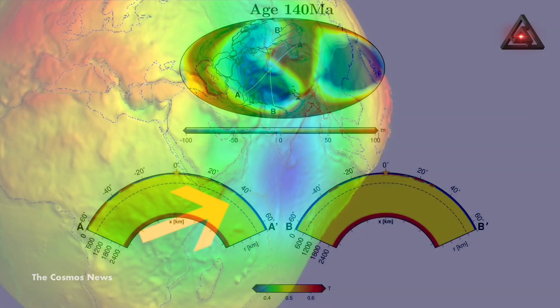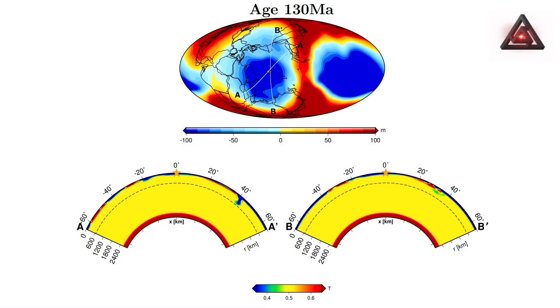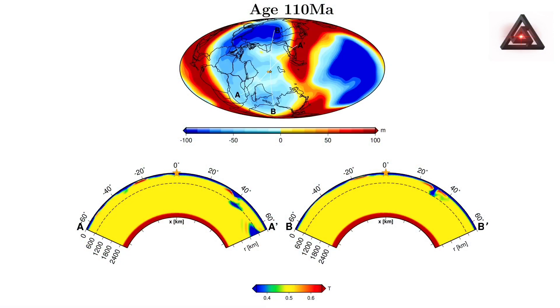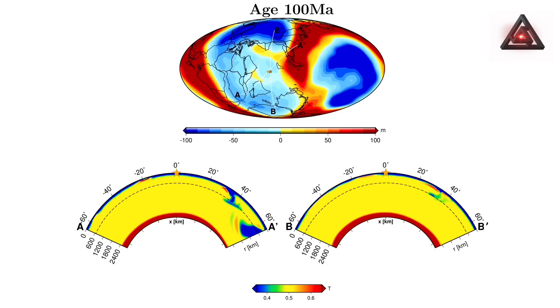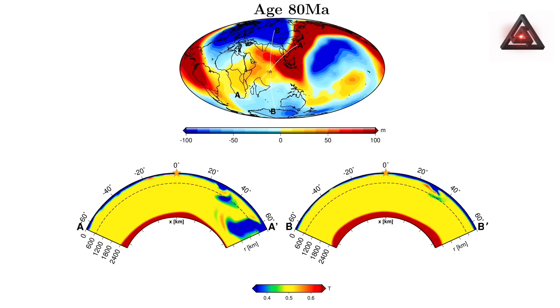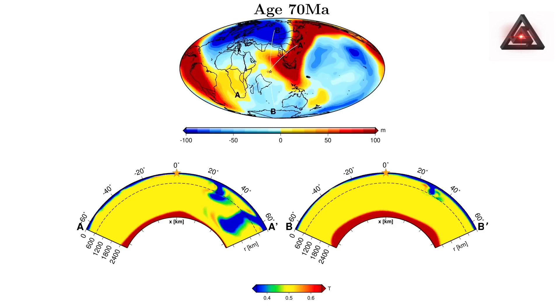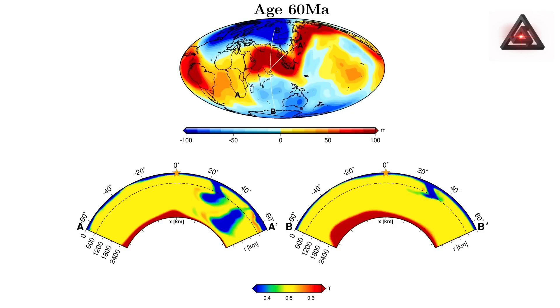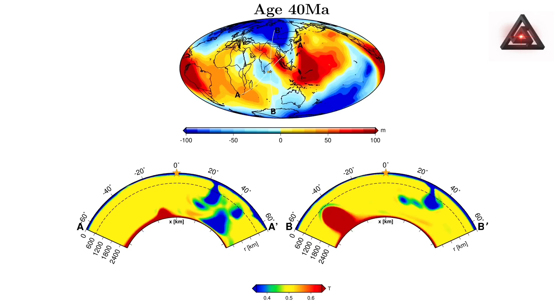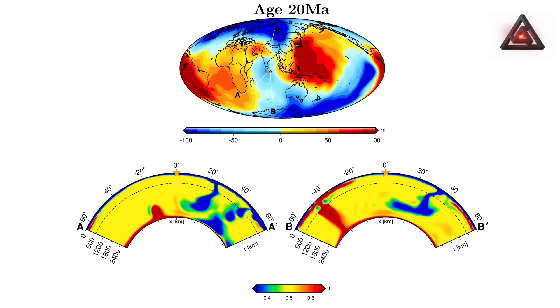Researchers found that some sections of tectonic plates have sunk through the mantle under Africa. Counteracting this depression, plumes of lesser-dense and hot mantle are springing up from under the Indian Ocean.